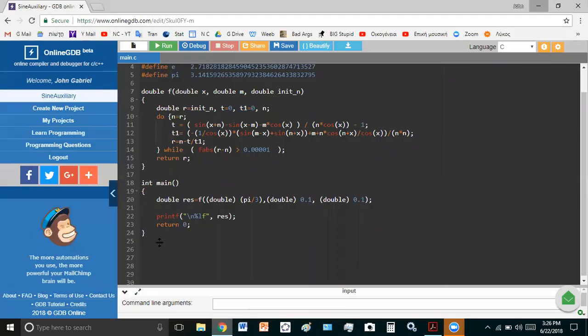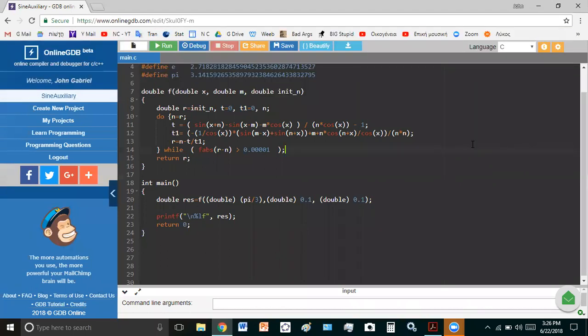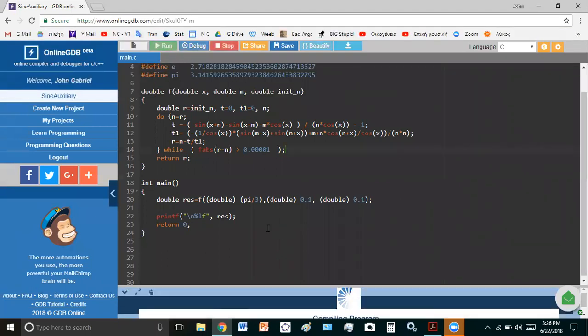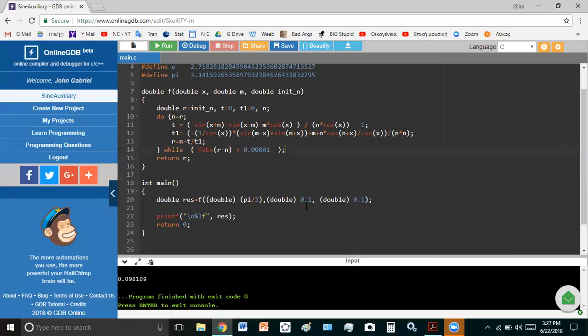And to give you a demonstration, you can go to the free compiler online, which is onlinegdb.com and run it here. Okay, so here, I'll tell you what I've done. I've chosen an angle of pi over three and an initial value, let me just open this up a bit, for n which is 0.1, an initial value, and a value of m which is 0.1, and I get 0.98109.